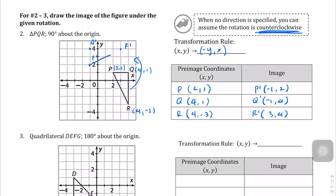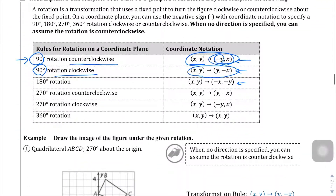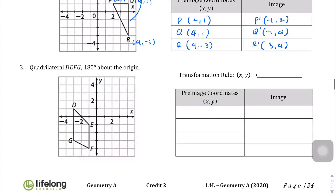There's the new triangle PQR rotated 90 degrees counterclockwise about the origin. For the last question, quadrilateral DEFG is going to rotate 180 degrees about the origin. Looking at the chart, for 180 degrees your (x, y) just takes opposite signs — it becomes (-x, -y). Once you do these often enough you'll end up memorizing that chart.